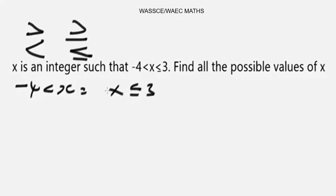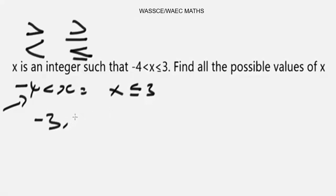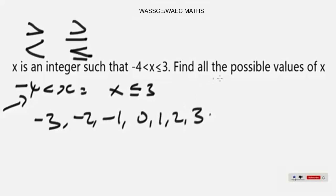To get the integer values of x in the range -4 to 3, knowing that this sign means x is greater than -4, the possible integer values of x would be from -3 to 3. So we have: -3, -2, -1, 0, 1, 2, and 3.